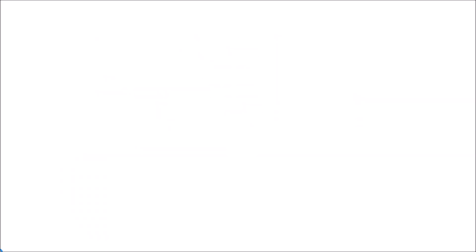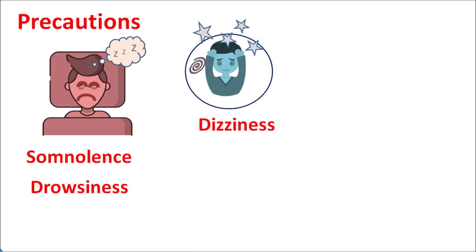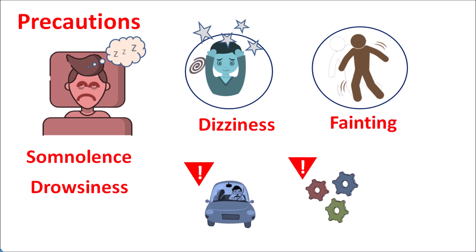Regarding precautions, gabapentin can increase somnolence, drowsiness, dizziness, and lightheadedness, which can lead to loss of balance and fainting. Therefore, patients prescribed gabapentin should take precautions when driving vehicles or operating machinery, as somnolence and drowsiness produced by this drug can impair daytime activity.